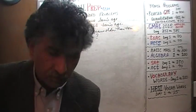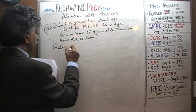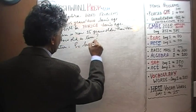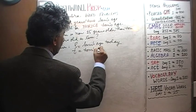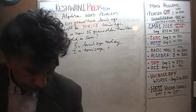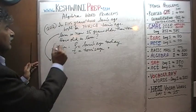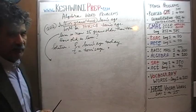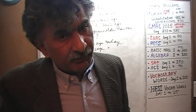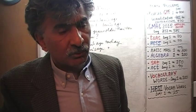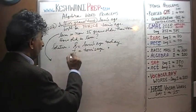First, define variables. Let s represent Sam's age today and let t represent Tom's age today. We are told Sam is now 15 years older than Tom. Always take care of the current time period first before worrying about the future or the past — if anything is given about the present, handle the present first.